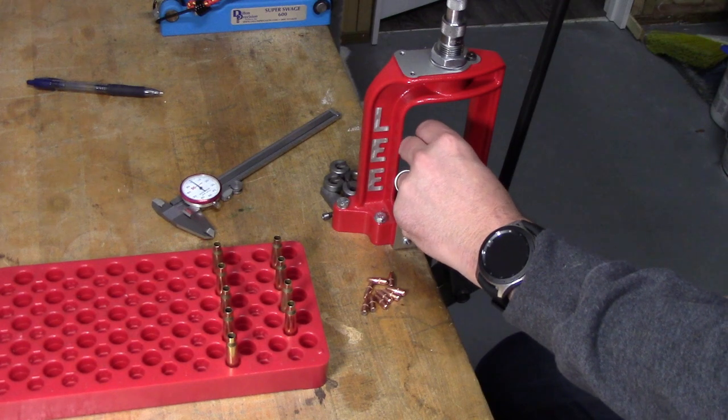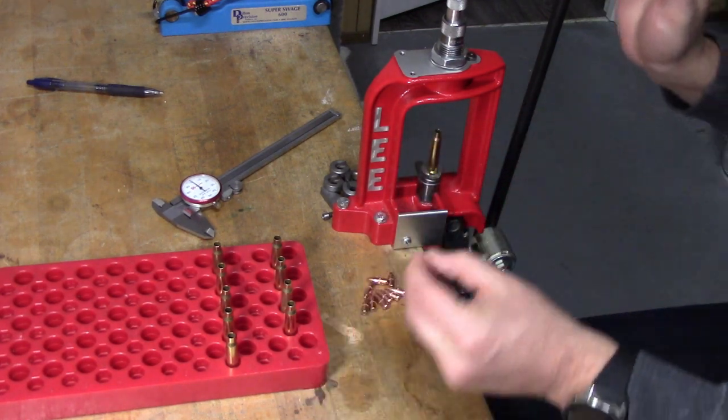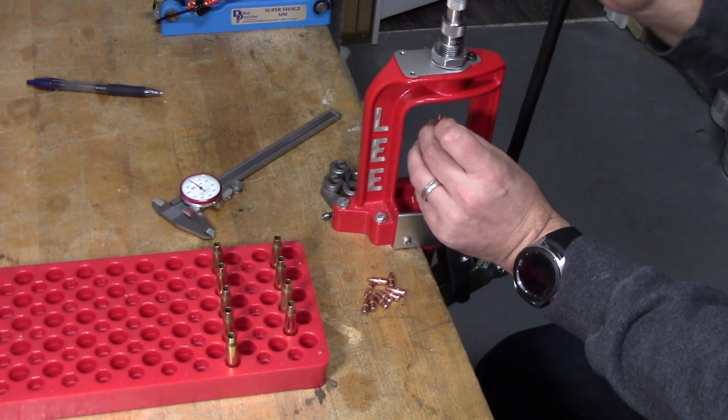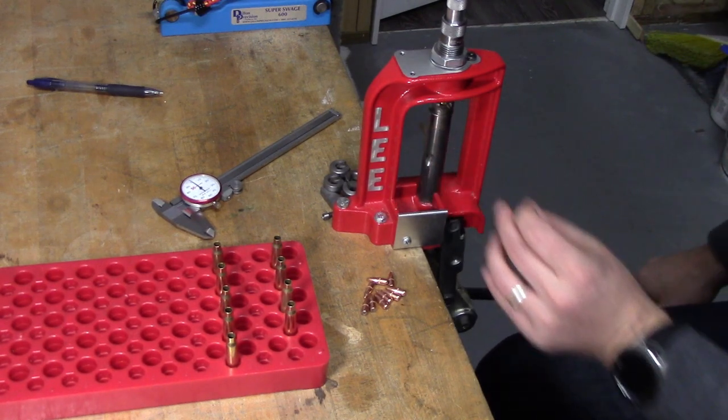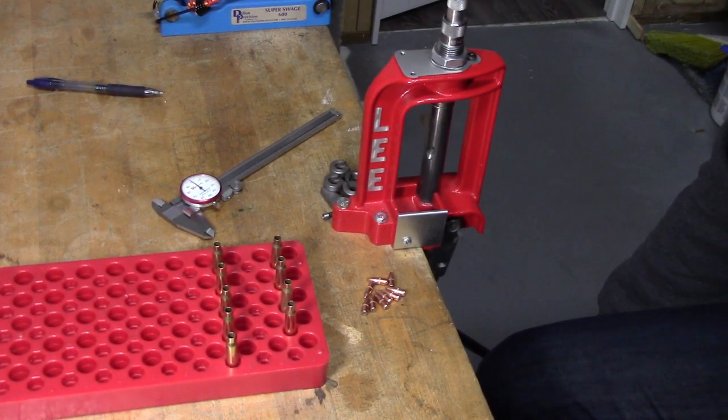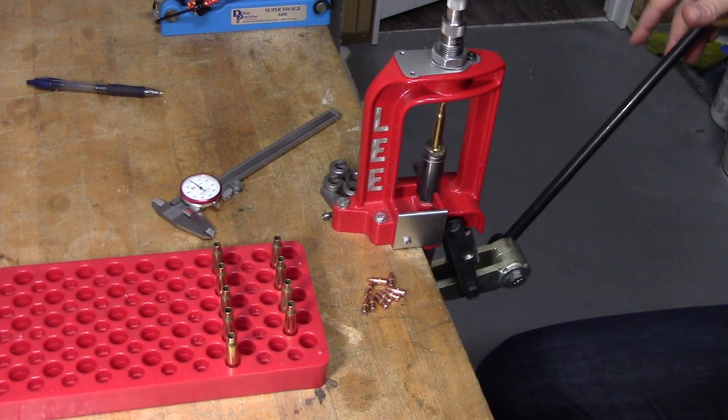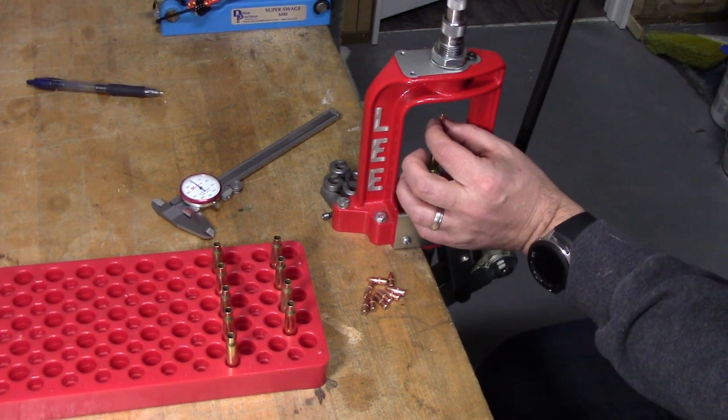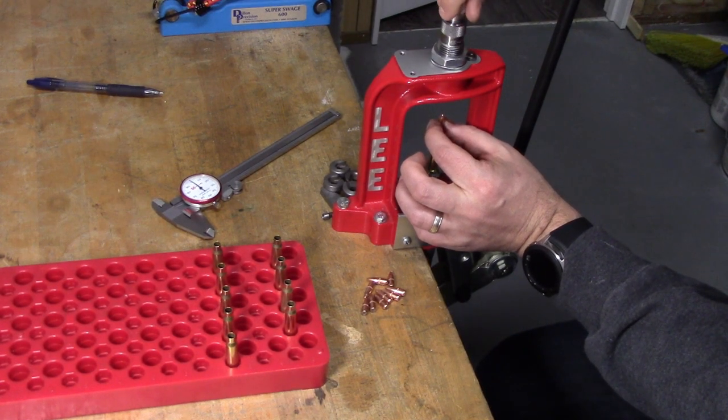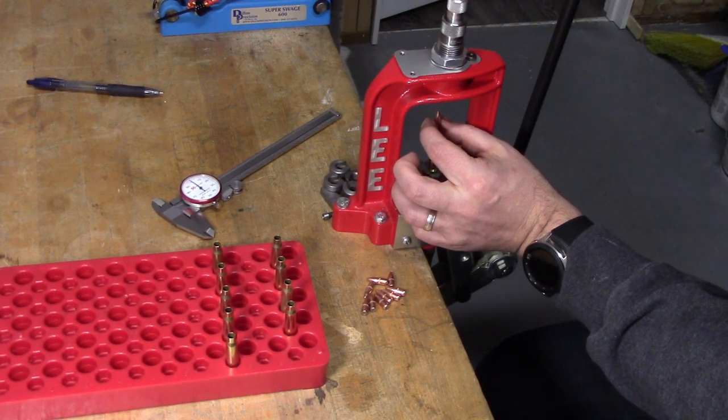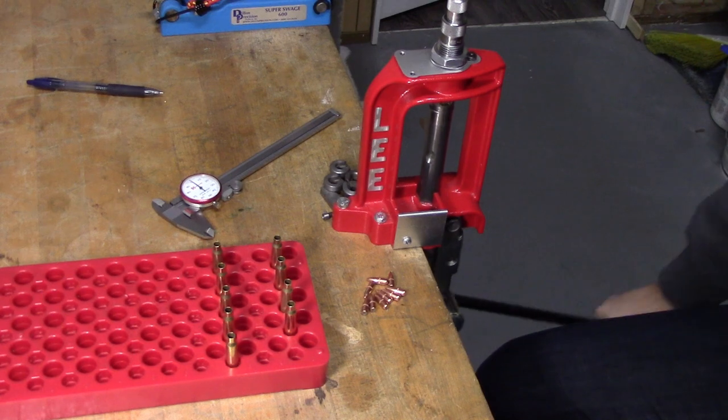I'm going to take a charged case with a bullet, seat it and raise the ram. I did not feel any tension at all on that, so our seating stem is way out. I'm sure it didn't even do anything yet. So now we can turn our seating stem in a few turns until our bullet starts to get seated inside the case.